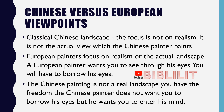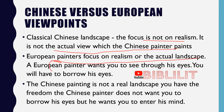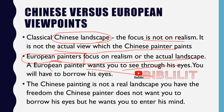Classical Chinese landscape does not focus on realism; it is not the actual view that is painted. European painters focus on realism and the actual landscape, painting the scene as they see it. A Chinese painter paints a view as he imagines it, using imagination to create the landscape. A European painter wants you to see through his eyes — you will have to borrow his eyes.